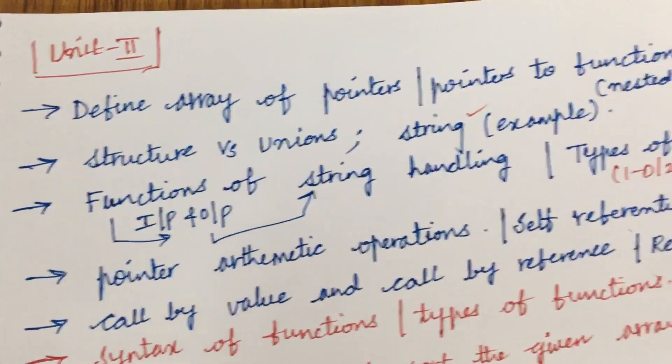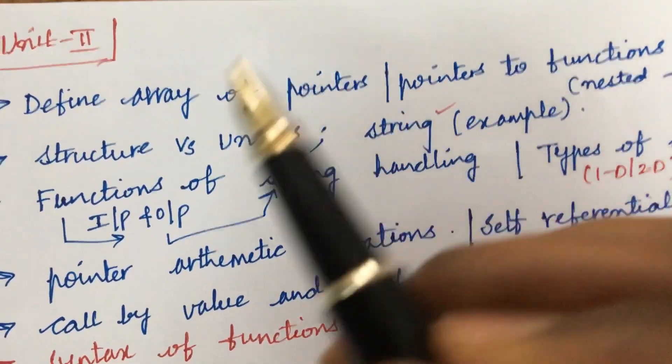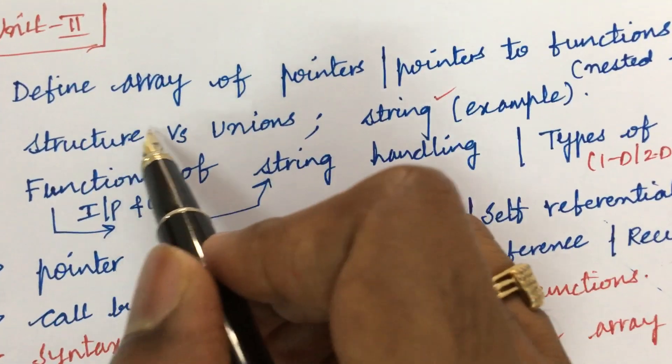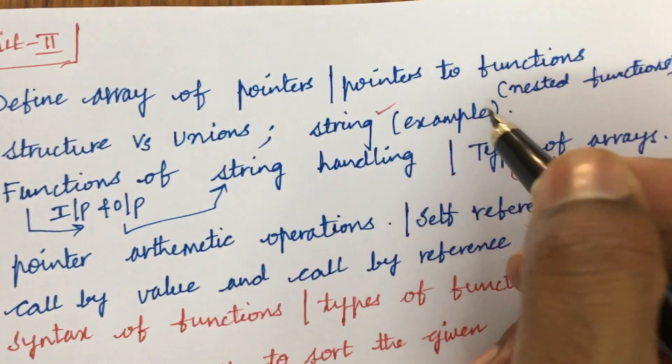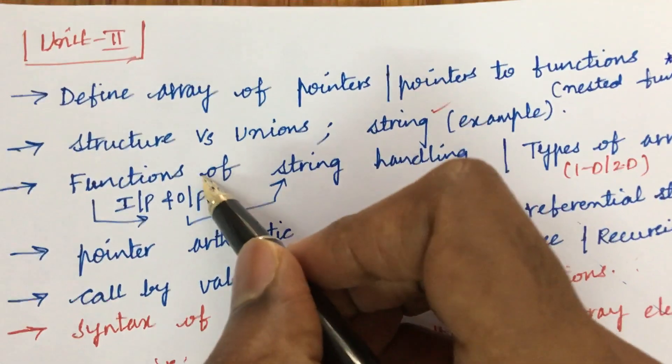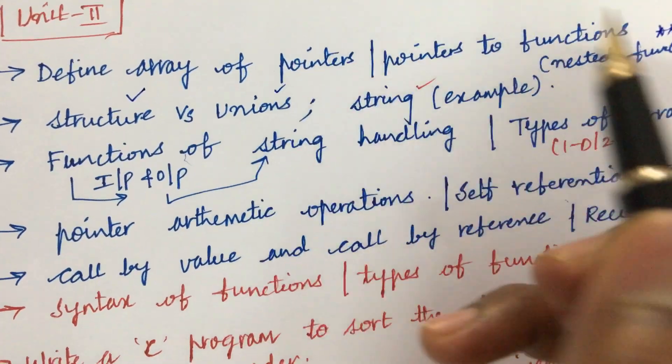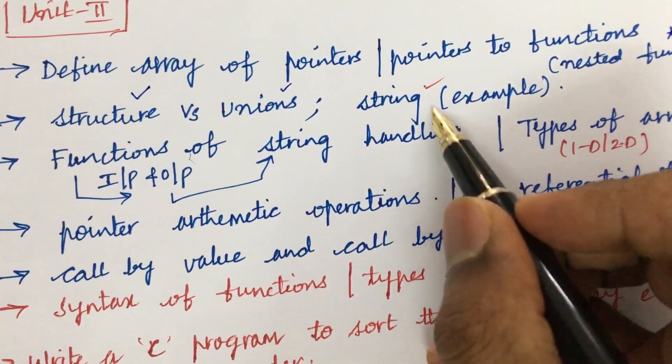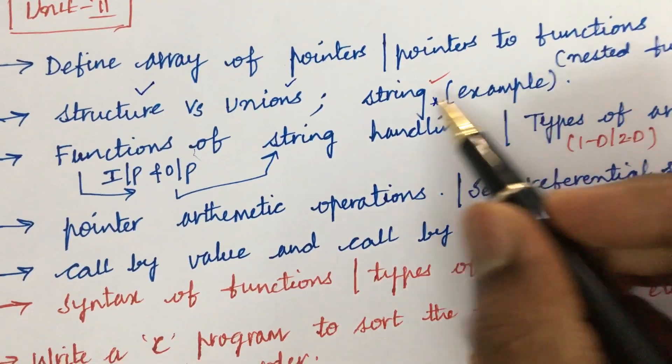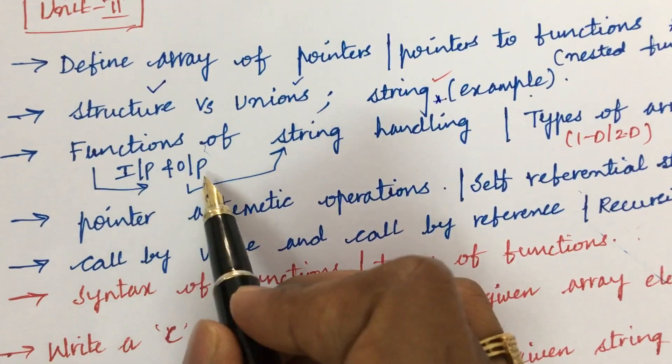Later I have come up with Unit 2 - it is all about arrays, pointers, structures, and strings. You need to be perfect with each and every terminology of these things. Define an array of pointers, pointer to functions, and nested functions - said to be very important and a gunshot question. Differences between structure and unions - you need to work out different types of structures, unions, and strings also, very important without that you cannot proceed to the third unit.